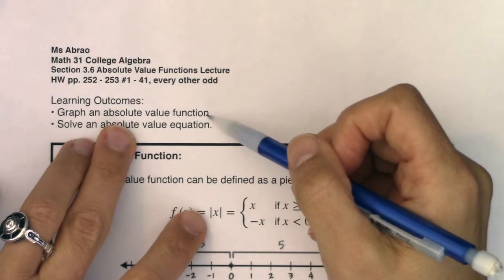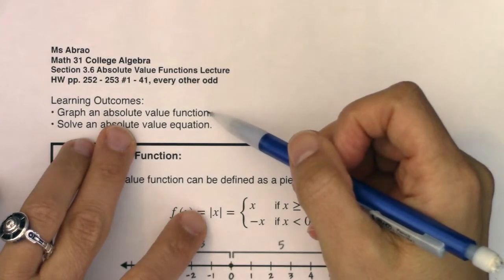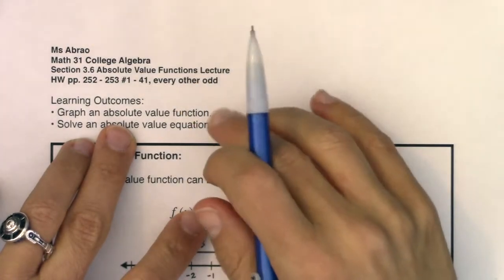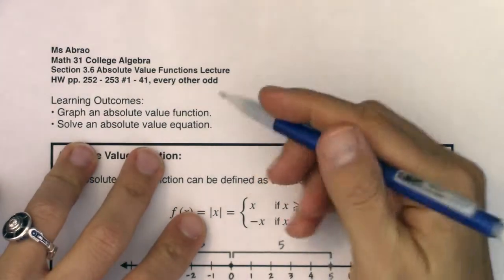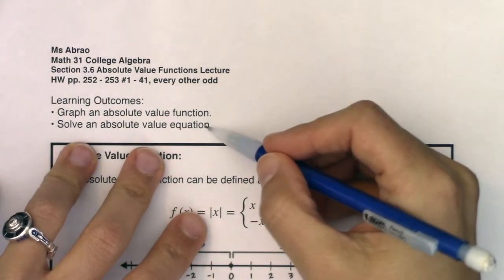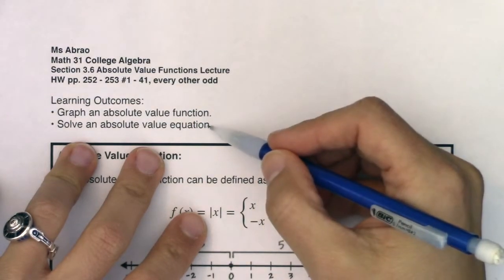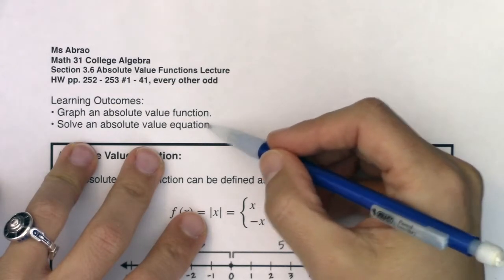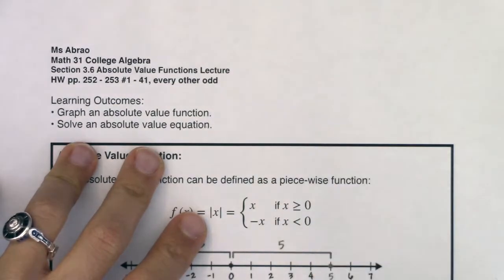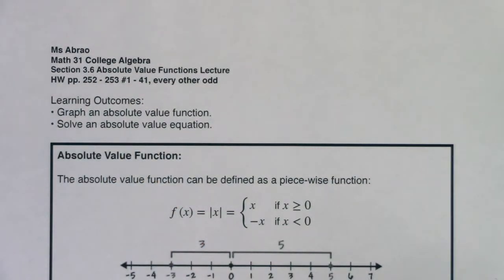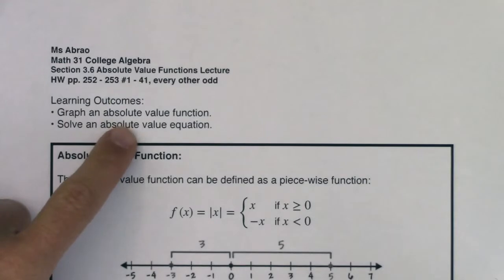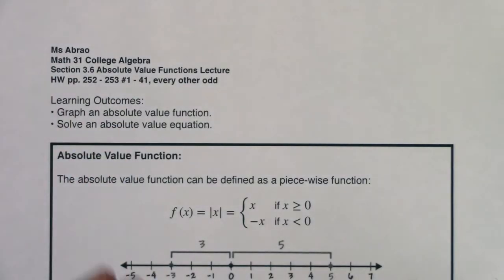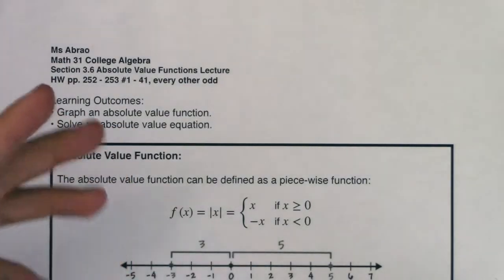We've seen these already in section 3.5 when we were transforming graphs, but we're going to really focus on it here in section 3.6. We've also already solved an absolute value equation, but we're going to do that this time through the lens of finding x and y intercepts. And if you remember from chapter two, the absolute value of a number is its distance from zero.